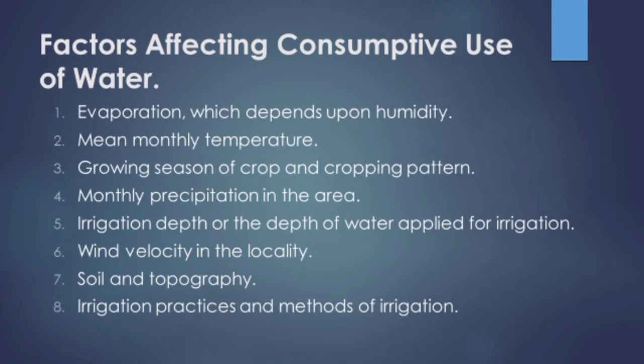The last factor is irrigation practices and methods. For example, drip irrigation or underground pipe irrigation results in very low values of evaporation. However, in the case of sprinkler irrigation, inundation irrigation, or flood irrigation, there are appreciable amounts of evaporation. So irrigation methods and practices are an important factor in consumptive use of water.